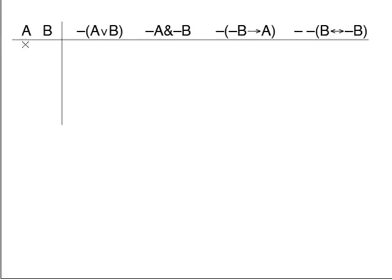We start by creating guide columns — we just list the sentence letters that appear in the formulas. There are only two sentence letters here, so we'll have four rows. Two sentence letters means four rows. Underneath the first letter, just alternate true, false, true, false.